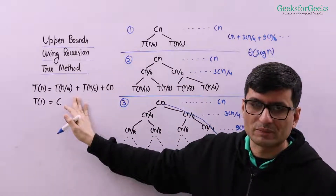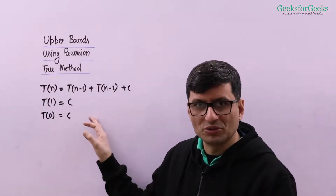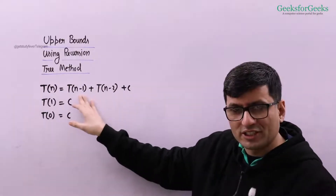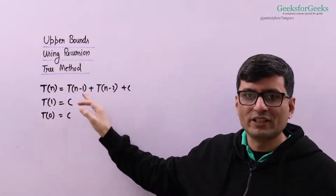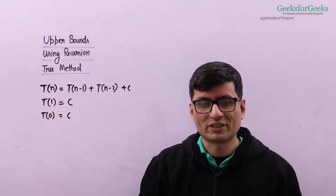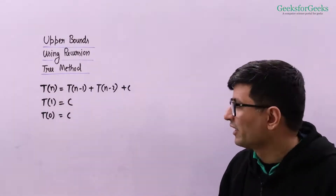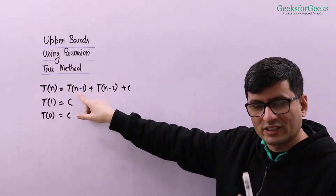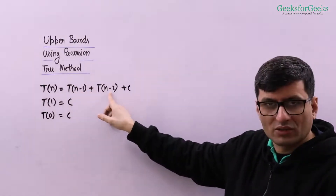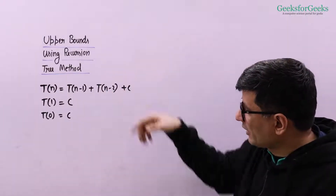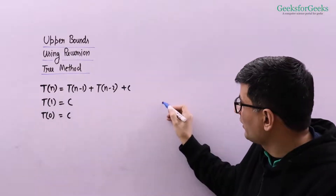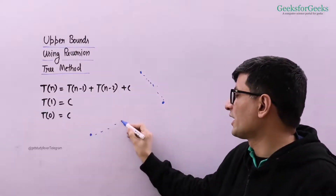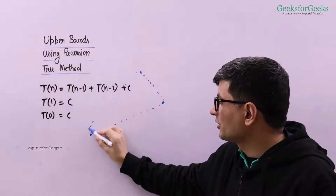Here is one more example where we use the recursion tree method to find an upper bound. Whenever you see a recurrence where one term changes at a different speed than another, you can find an upper bound using the recursion tree method, since exact computation may be difficult. If you draw the recursion tree, one side reduces one step at a time and the other reduces two at a time, so one branch finishes very fast and the other very late.